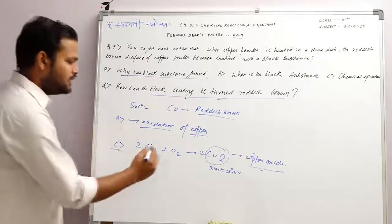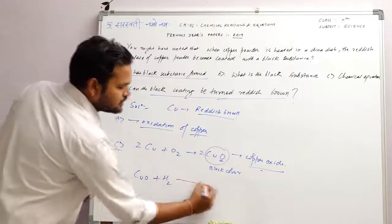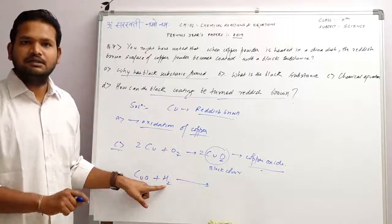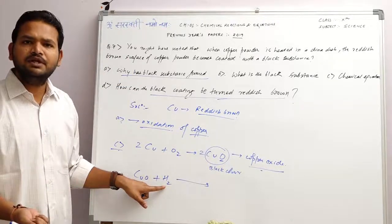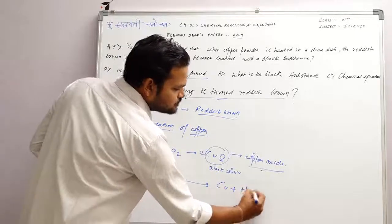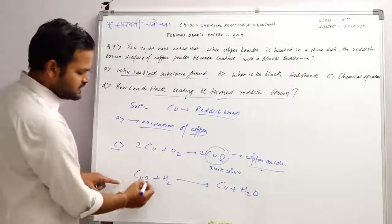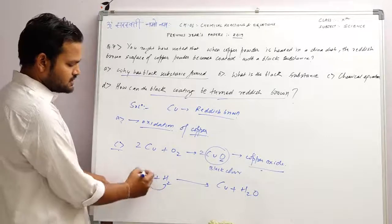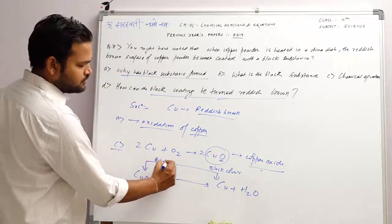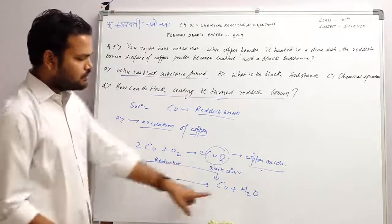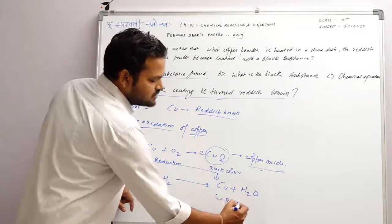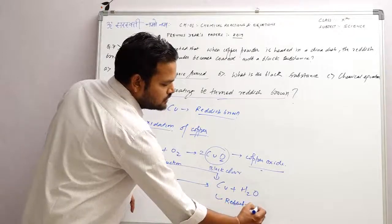We have explained reduction and oxidation before. So here, copper oxide, if we reduce it — that is the meaning of reduction. What will happen? Cu plus H₂O. This oxygen will be removed. This will be reduction. So you will get copper — you will get the reddish brown substance. This is the whole portion for 2019.